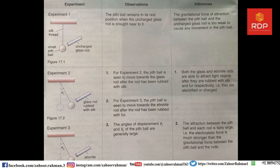You can see there is a silk thread, a small pith ball, and an uncharged glass rod. When the uncharged glass rod is brought nearer to the pith ball, the pith ball remains in its rest position — it is neither repelling nor attracting the pith ball. What is the inference? The gravitational force of attraction between the pith ball and the uncharged glass rod is too weak to cause any movement in the pith ball.